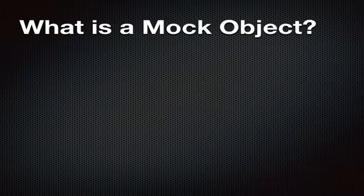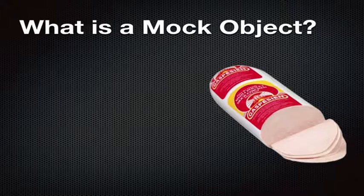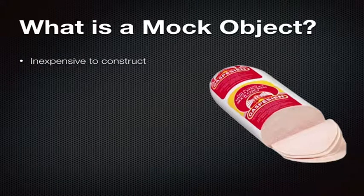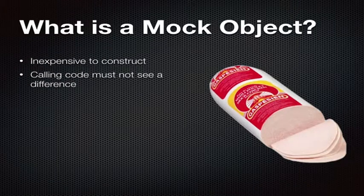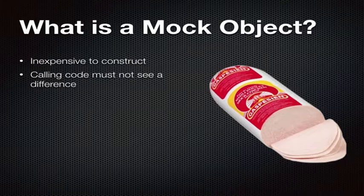What is a mock object? It is this — unfortunately this is too small to read, but the label says 'mock chicken loaf.' That is the point of a mock object: it is cheap, like mock chicken. It is inexpensive, because otherwise why would you buy that? The calling code cannot see the difference, just as when you're eating your sandwich it feels the same, but you're saving money.